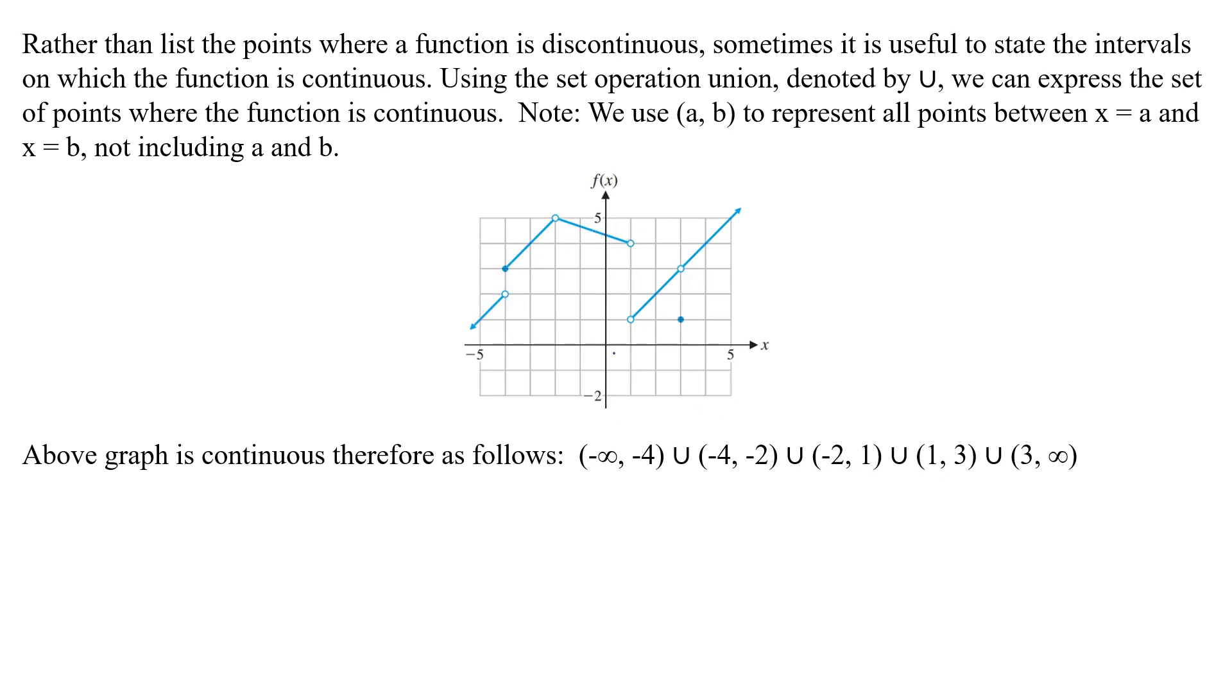And so that would be this part. And then from one up to, oh, is that three? And then from three on up to positive infinity. And so that's kind of the continuous region for the graph. And again, it's easier sometimes to do that than write all the discontinuous parts. So that's how we would do that one. All right. So let's pause there and we'll come back with some examples.